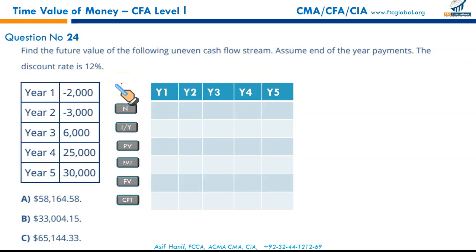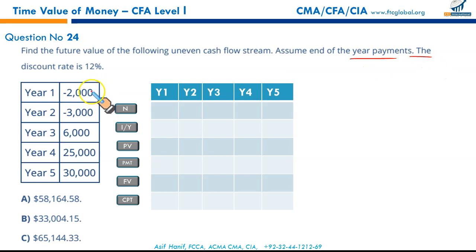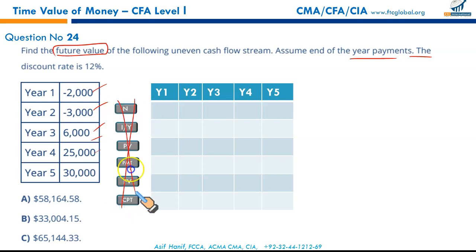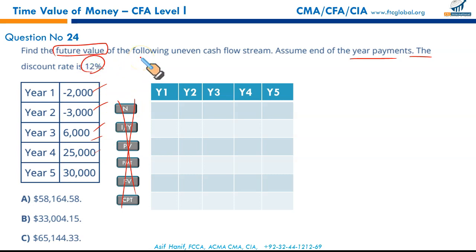Find the future value of the following uneven cash flow stream — assume end-of-year payments. We have to calculate future value of a non-repetitive stream. Don't use TVM — you'd have to calculate FV of each individual cash flow. Interest rate is 12%.